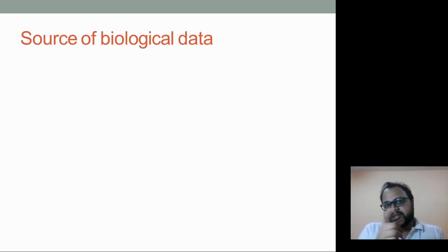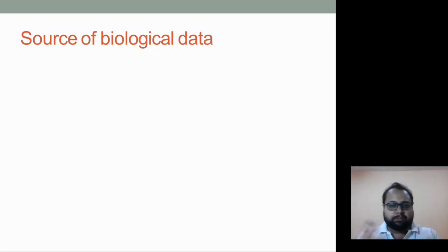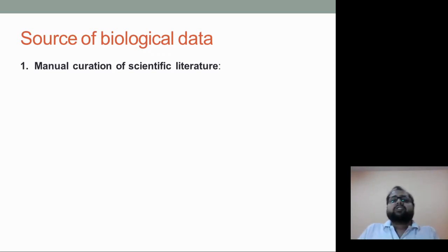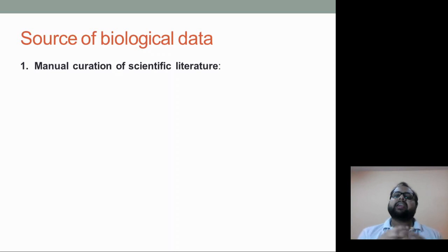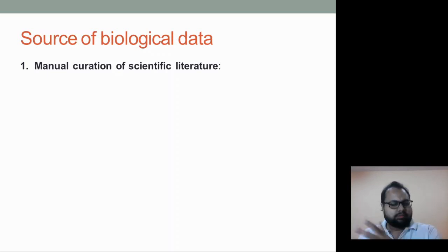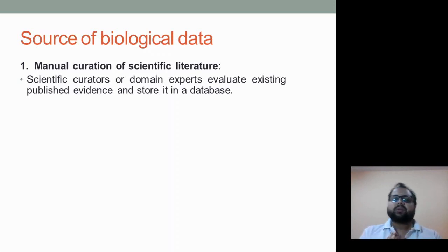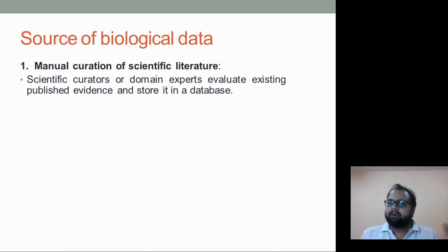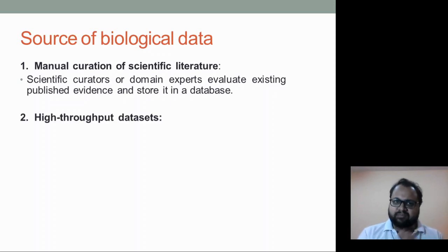There are three basic sources from where you can obtain PPI or protein-protein interaction data. The first source is manual curation of scientific literature. As the name suggests, you go to a scientific literature database — for example, PubMed — or even books, and you go through them manually. You annotate each and every piece of information, find redundancies or errors, and then compile them to form a database.